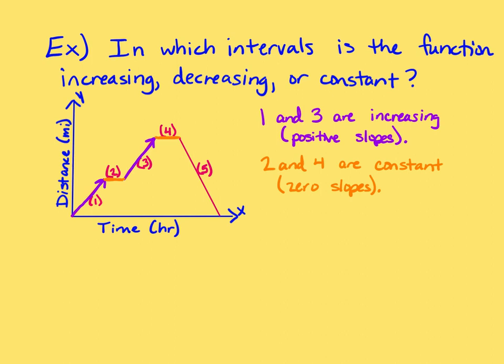And then last, we have one segment that when we read from left to right, it's going down to the right, segment five. Segment five is decreasing. Notice that it has a negative slope.